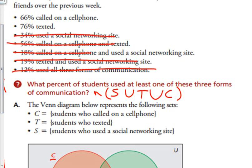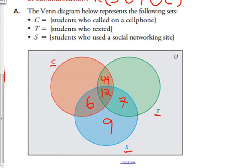76% texted. So 76 minus 44 minus 12 minus 7 gives me 13% just texted or only texted.